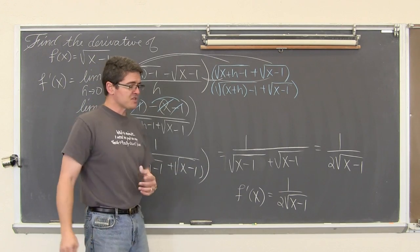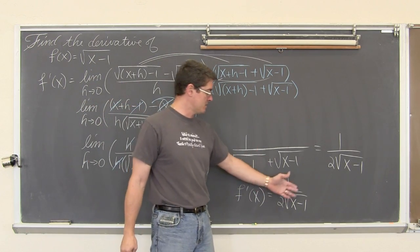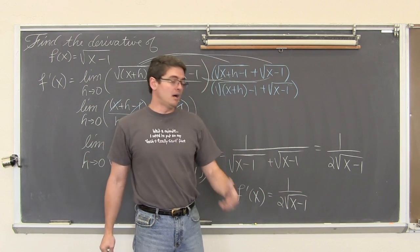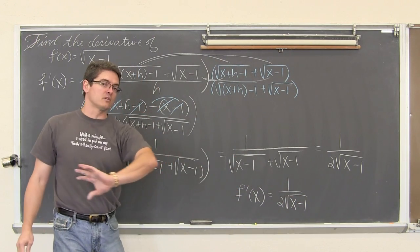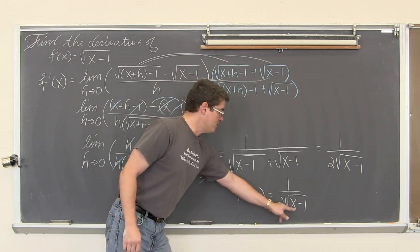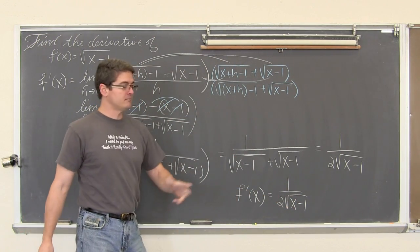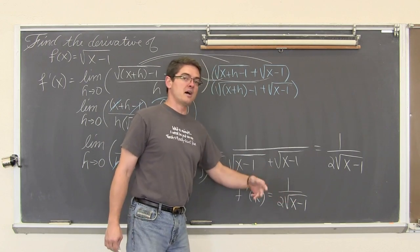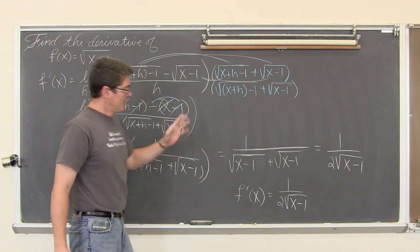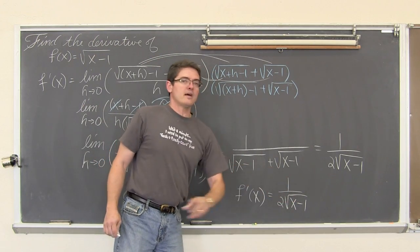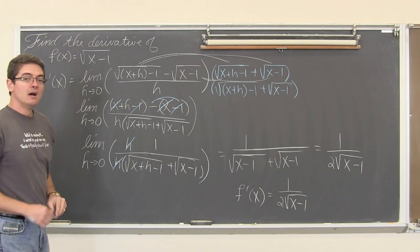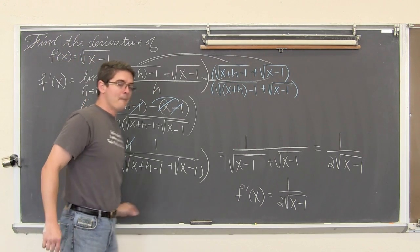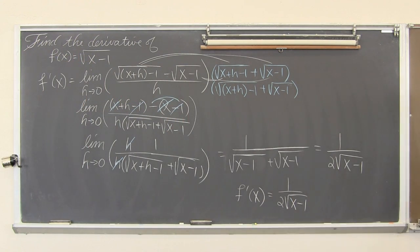Hopefully your teacher is not going to make you rationalize the square root out of the denominator and they are happy that you have got the derivative. You can take any value of x for which this is defined and the original function is defined, plug in any value of x, and you have got the slope of this original function. I am Mr. Tarrou. Go do your homework and thank you for watching.